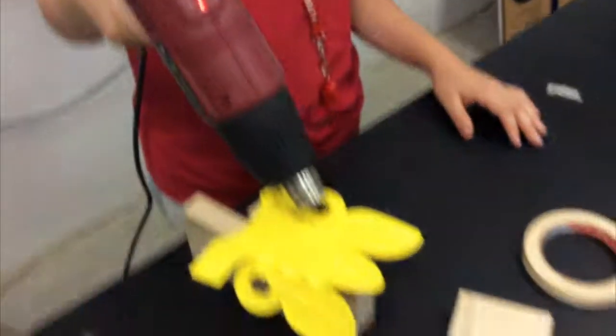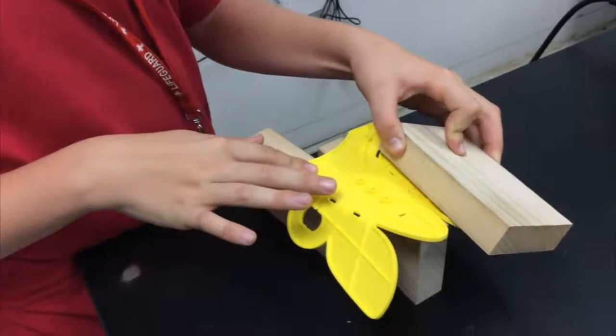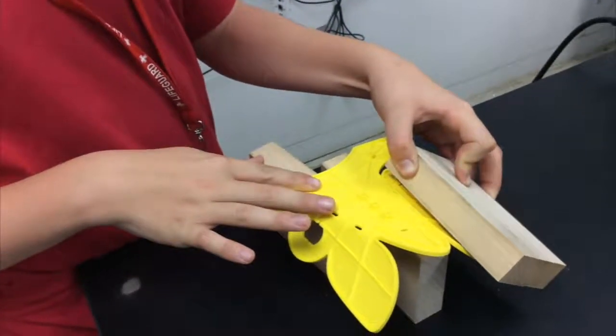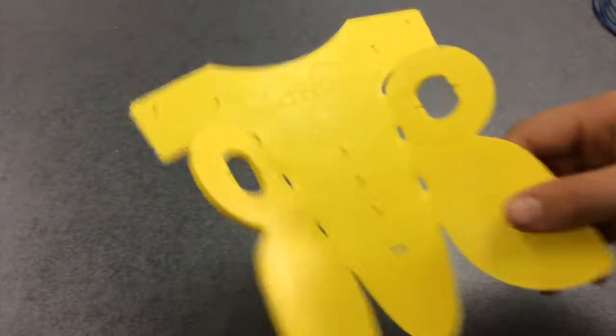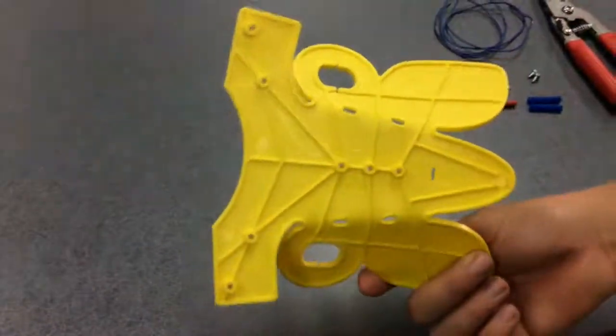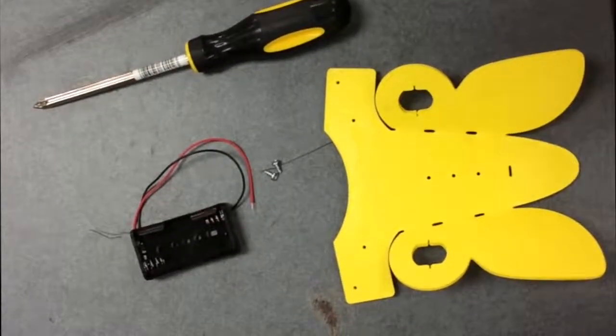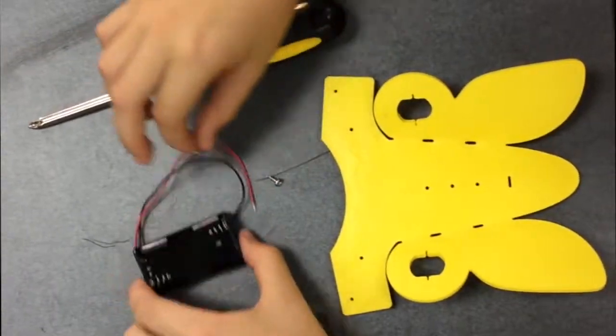First, use the heat gun to soften up the plastic wings so you can bend it. Next, use the screws to attach the battery pack to the back of the butterfly.